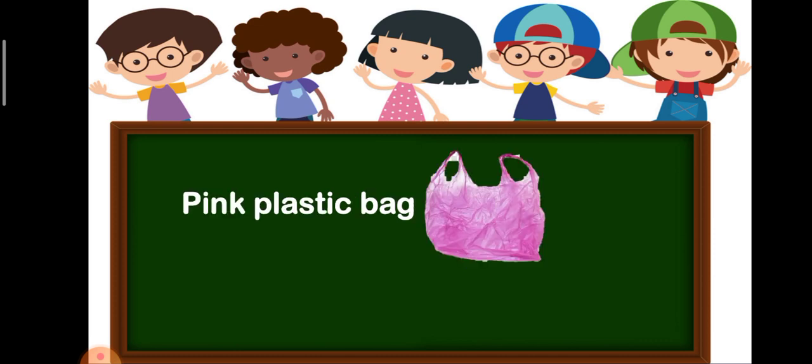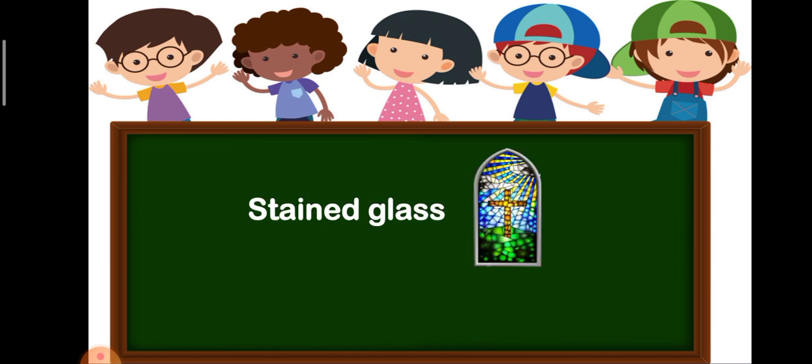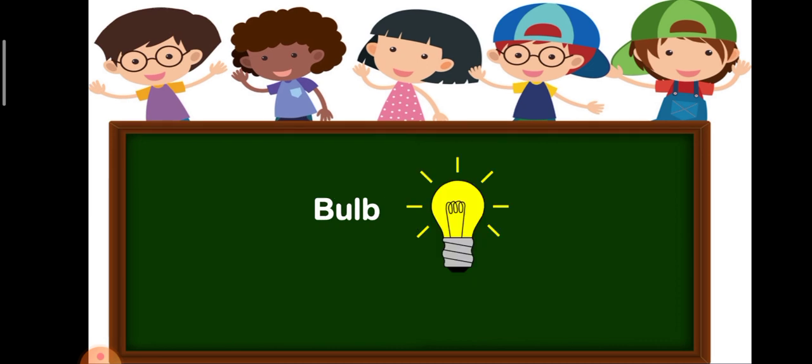Pink plastic bag. It's a translucent material. Stained glass. It's also a translucent material. Bulb. It's a transparent material.